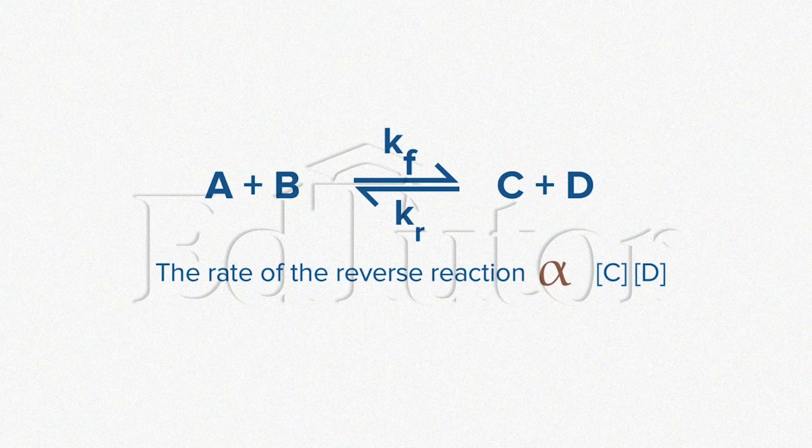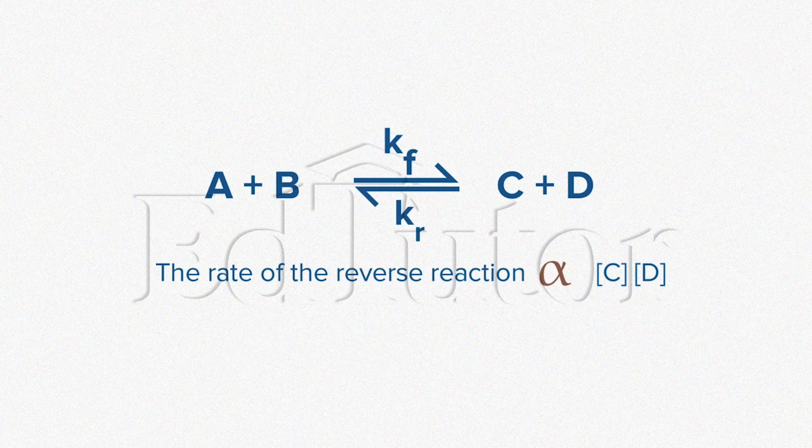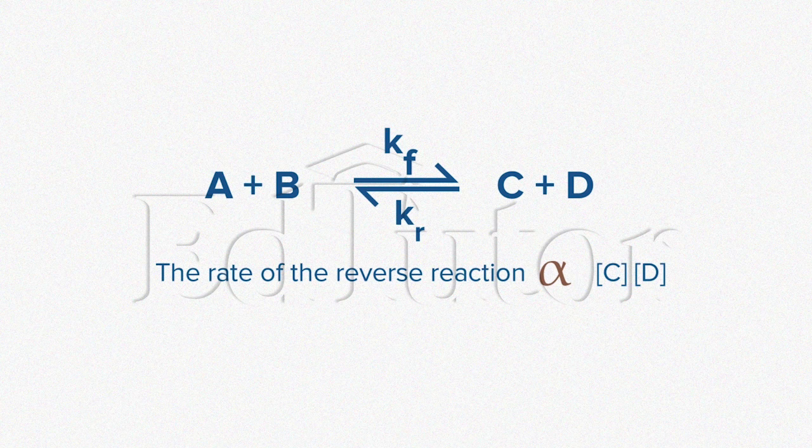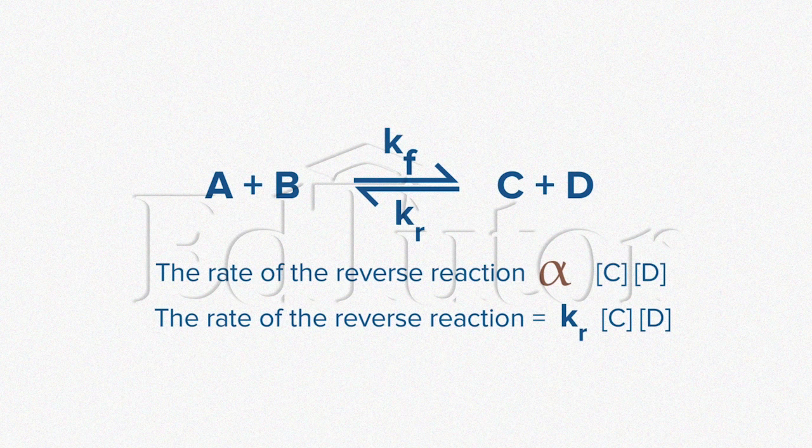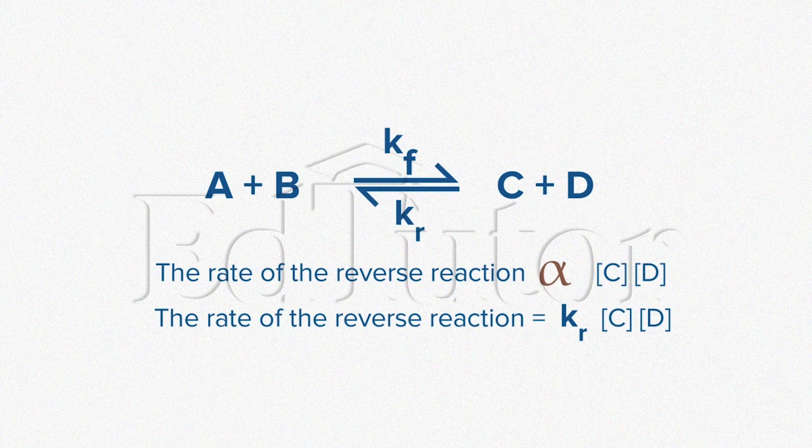If we were to write the reverse of the above reaction, meaning C and D react to form A and B, we would get the following equation. Mathematically, it can be expressed as the rate of reaction is equal to Kr multiplied by the concentrations of C and D, where Kr is the constant for the reverse reaction.